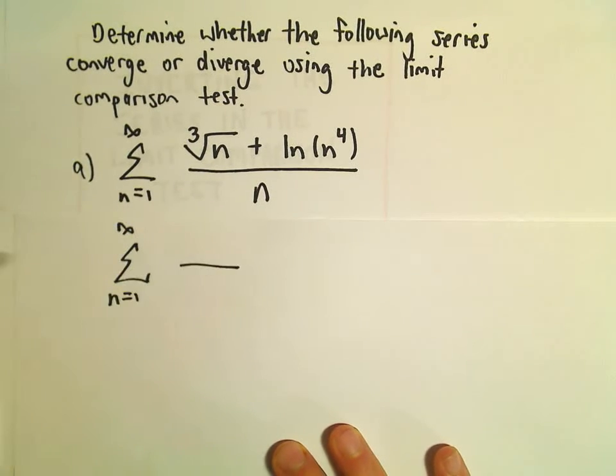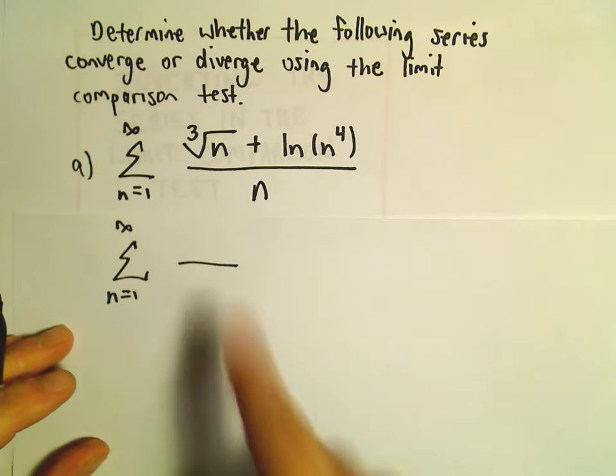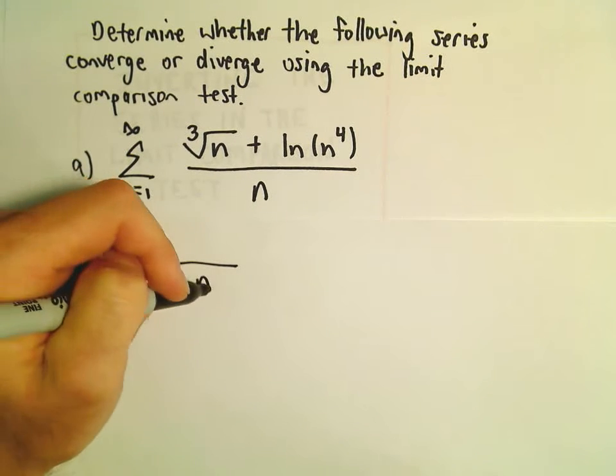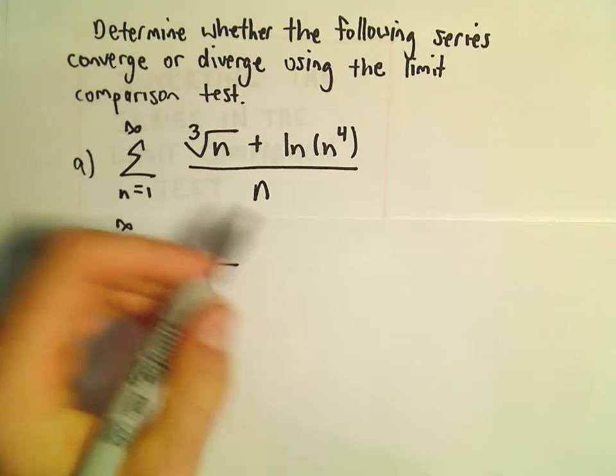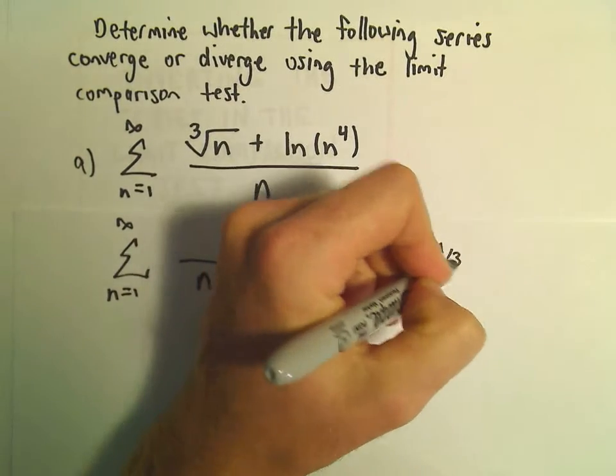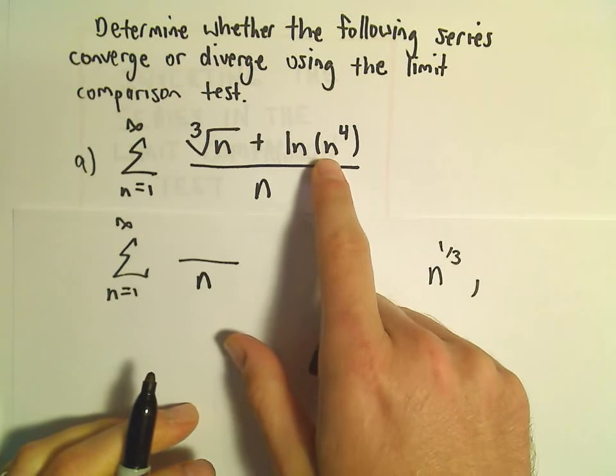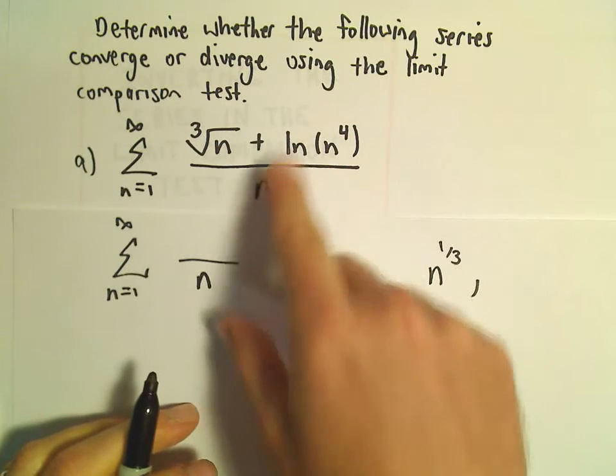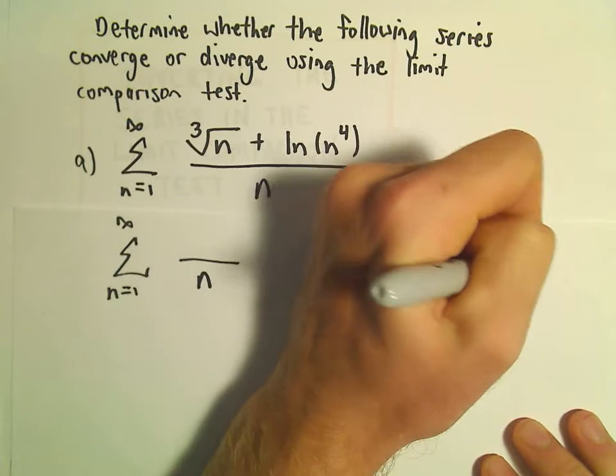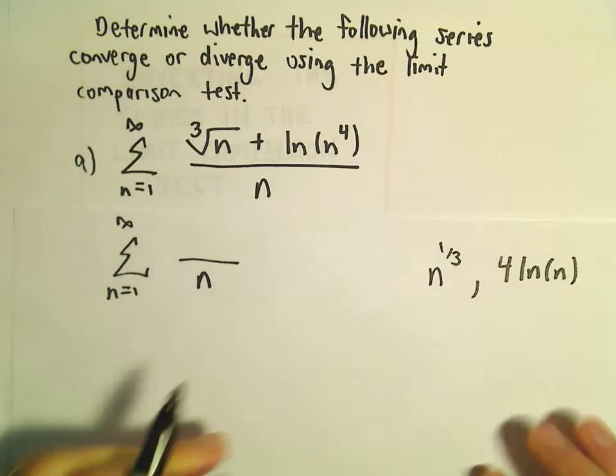So again, I'm going to do this trick of keeping dominant terms. Well, in the denominator we've got n, so there's not much to choose from there. In the numerator we've got the cube root of n, or equivalently n to the 1/3. And then we've got the natural logarithm of n to the 4th. But recall we can use properties of logarithms to rewrite that as 4 ln of n.